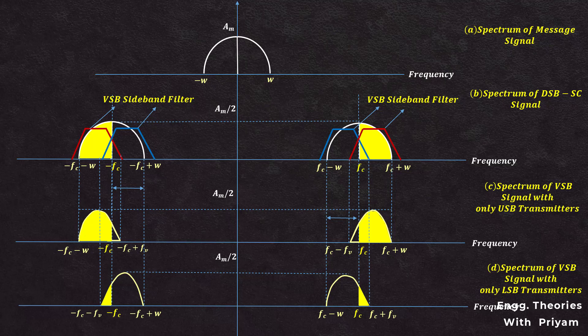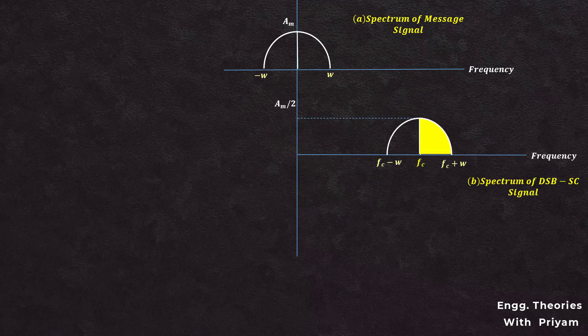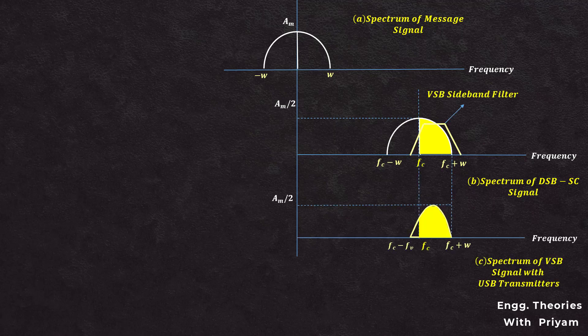Let's understand how the VSB sideband filter functions by taking only the positive portion of the frequency response of the DSB-SC modulated signal. The message signal spectrum and the positive portion of the DSB-SC signal spectrum are considered. Passing this through a VSB sideband filter generates a VSB modulated signal spectrum with a vestige of the lower sideband from fc−fv to fc.